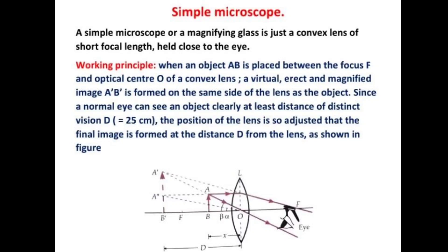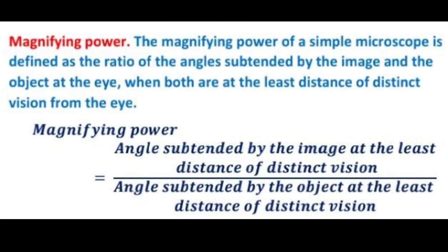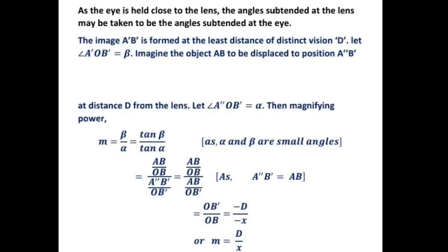Since a normal eye can see an object clearly at a least distance of distinct vision up to 25 centimeters, the position of the lens is so adjusted that the final image is formed at a distance D from the lens. The magnifying power is defined as the ratio of the angle subtended by the image and the object at the eye when both are at a least distance of distinct vision. For a simple microscope, the eye is held close to the lens.